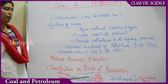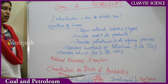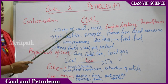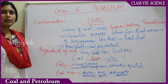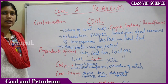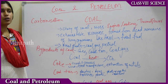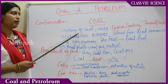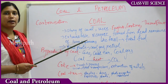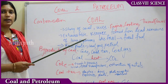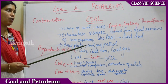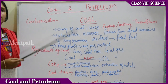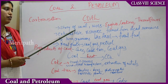Now we shall go into detail about natural resources, starting with coal. Coal is a natural resource. Approximately 300 million years ago there were many forests and wetlands. Due to natural disasters like floods, these got buried under the soil, and due to high pressure and temperatures, the natural vegetation turned into coal.